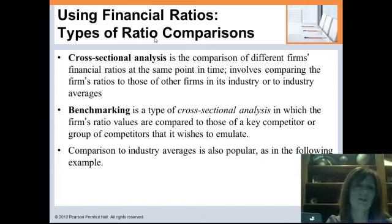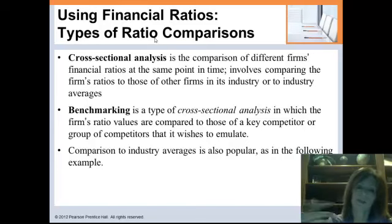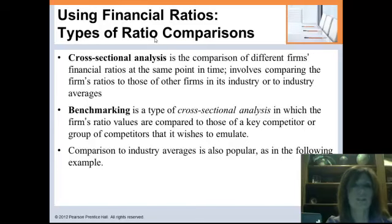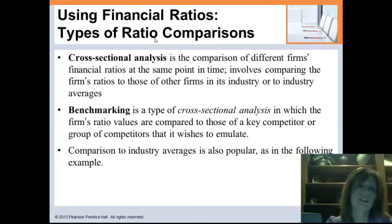We're going to do two comparisons every time we do a ratio analysis. The first is called cross-sectional analysis: we take a company at a certain point in time and compare it to other companies. If I know I made a 12% return, how do I know if that's good or not? By seeing what other companies like me do — that gives a good indication of whether the return is acceptable for the industry and economic conditions.